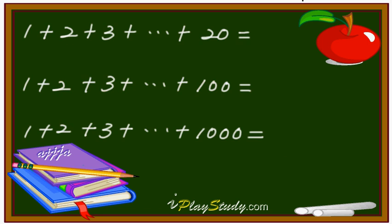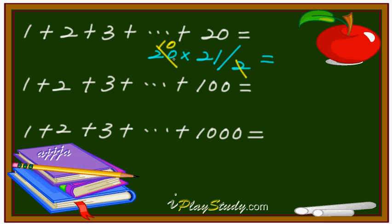What is the sum of one through twenty? That's one plus two plus three, all the way to twenty. The last number is twenty, the next number is twenty-one, then divide by two. Twenty divided by two is ten, and ten times twenty-one is two hundred ten.